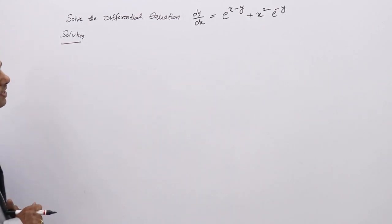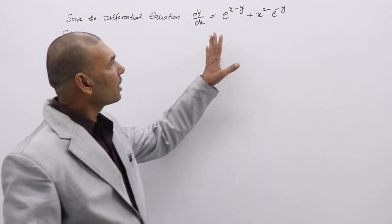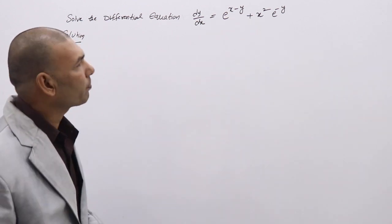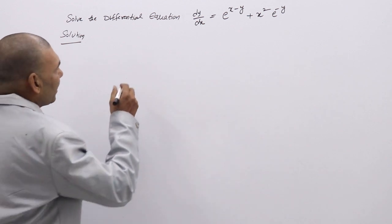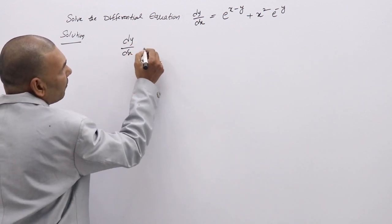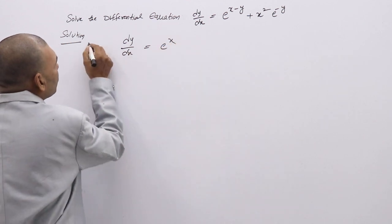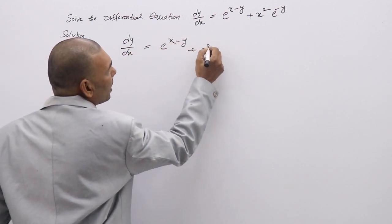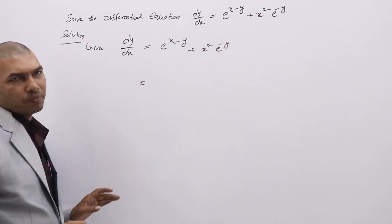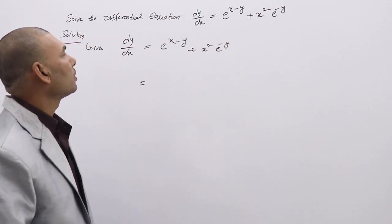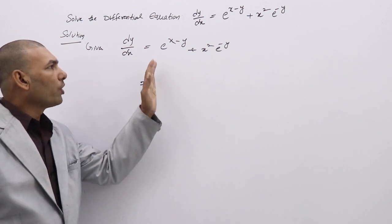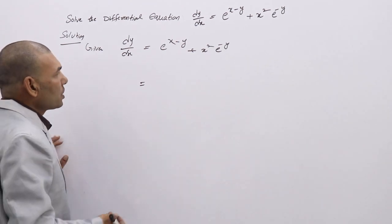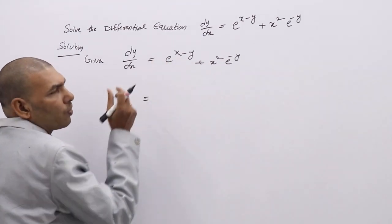Solve the differential equation: dy/dx = eˣ⁻ʸ + x²e⁻ʸ. By just looking at the DE directly, we cannot immediately decide it is in variable separable form. So first write the given DE and simplify it. Using the formula aᵐ⁺ⁿ = aᵐ · aⁿ, we split the first term: eˣ⁻ʸ = eˣ · e⁻ʸ.